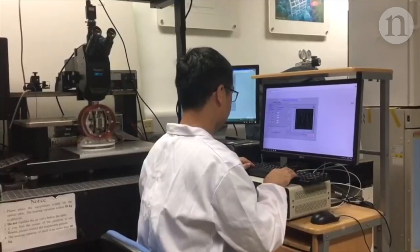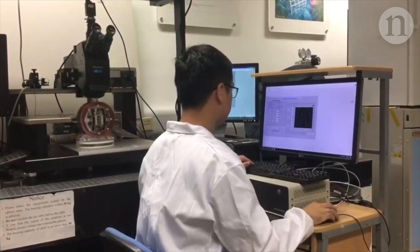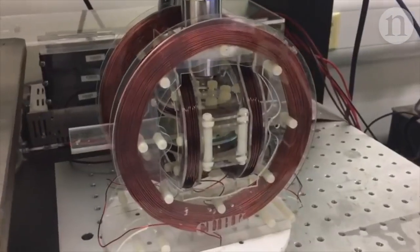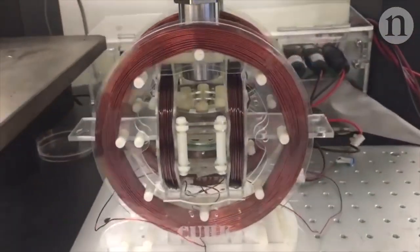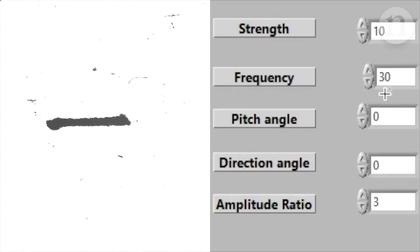This simple-looking blob is actually a swarm of millions of magnetic nanoparticles. The swarm is controlled by a rapidly oscillating magnetic field. Modifying the magnetic field allows the microswarm to move about.